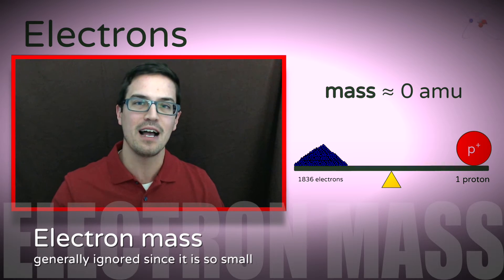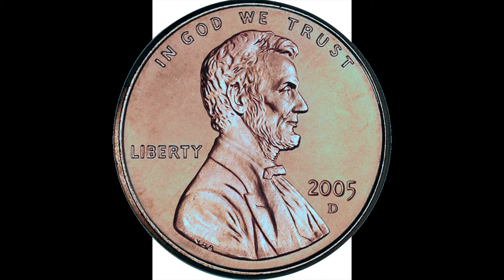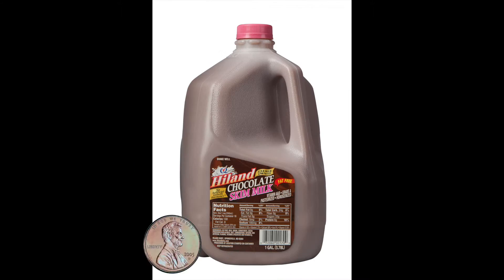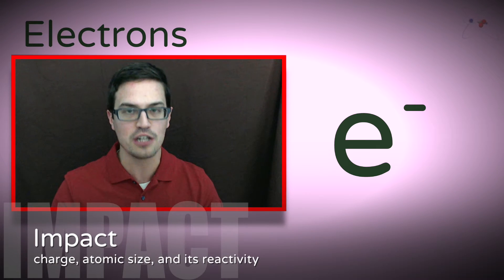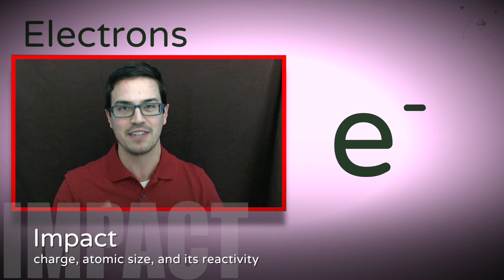To put it in perspective, if an electron weighed the same as a penny, a proton would weigh the same as a gallon of milk. The biggest impact that an electron has on an atom is its charge, its size, because electrons are on the outside of the atom, as well as the reactivity.